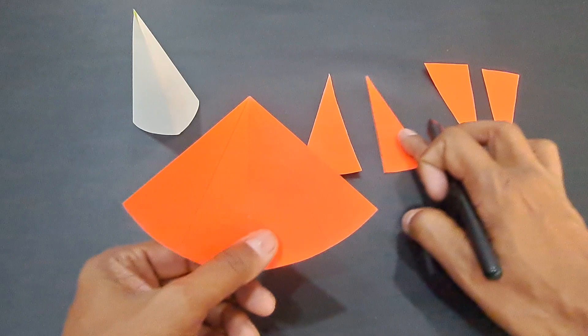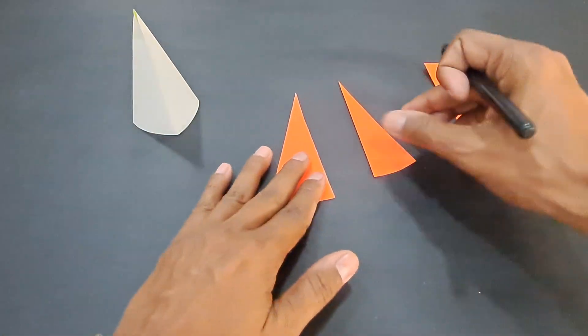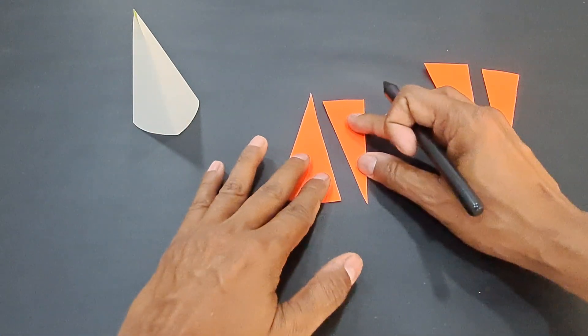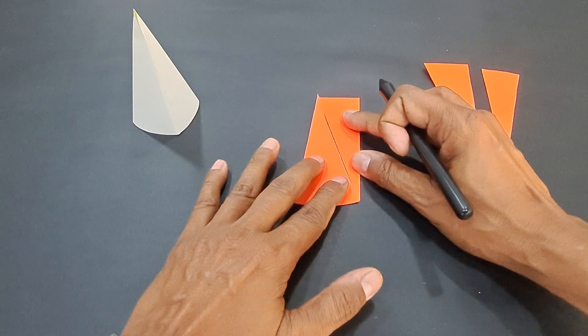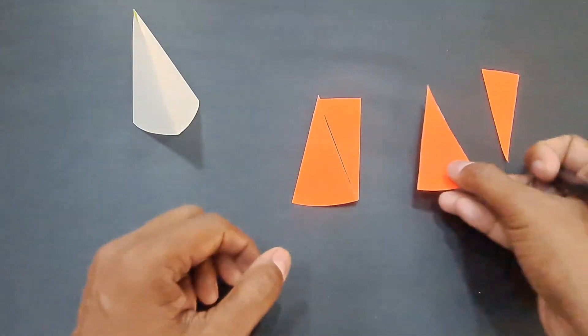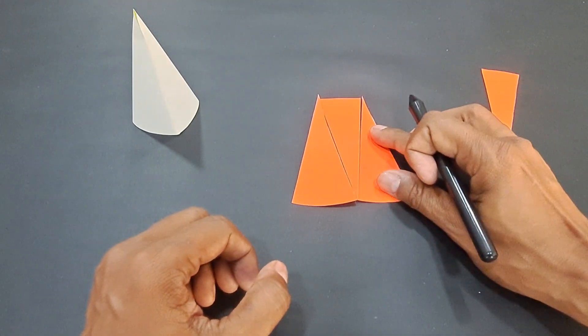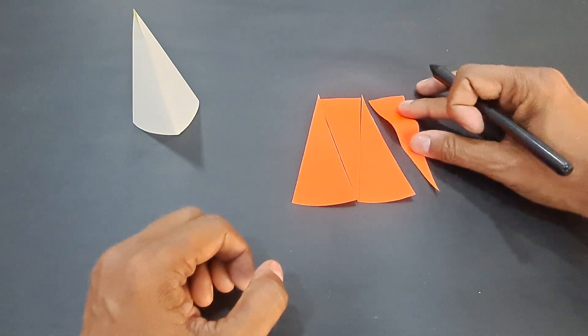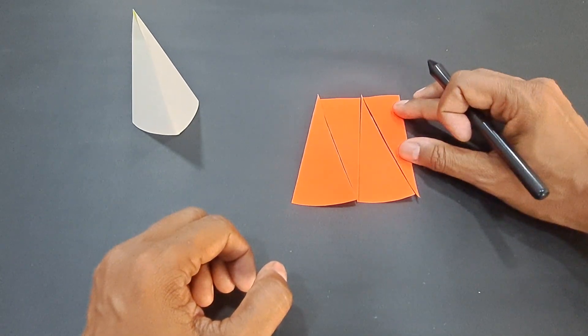When you arrange all these pieces in this form, one of them has to be inverted like this. Keep on arranging all the pieces. I have taken only four pieces, that's why the shape is looking like this.